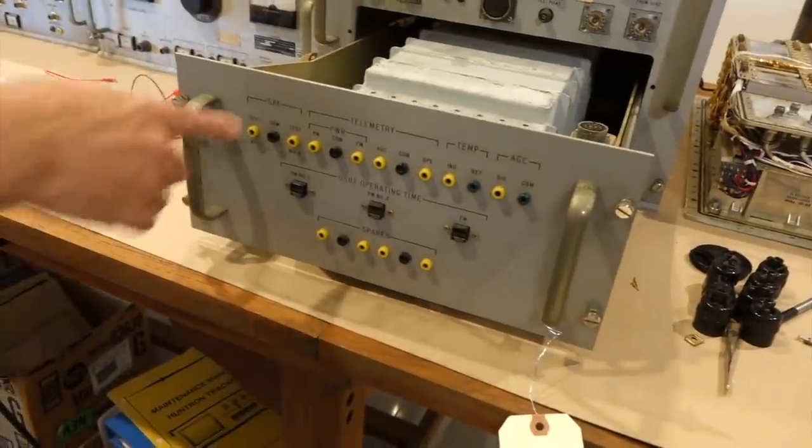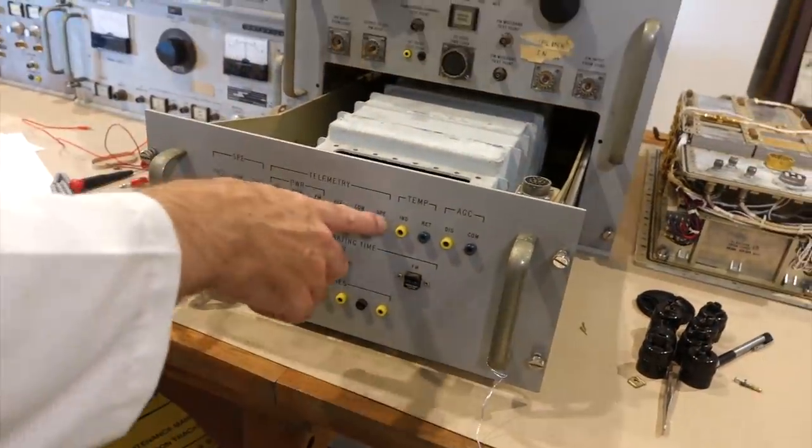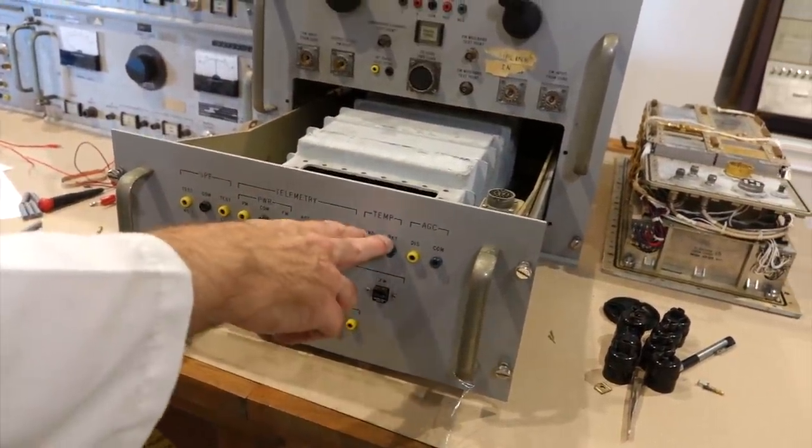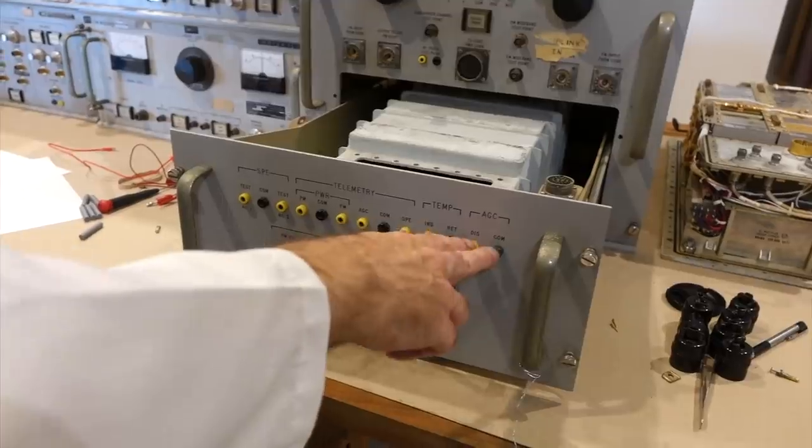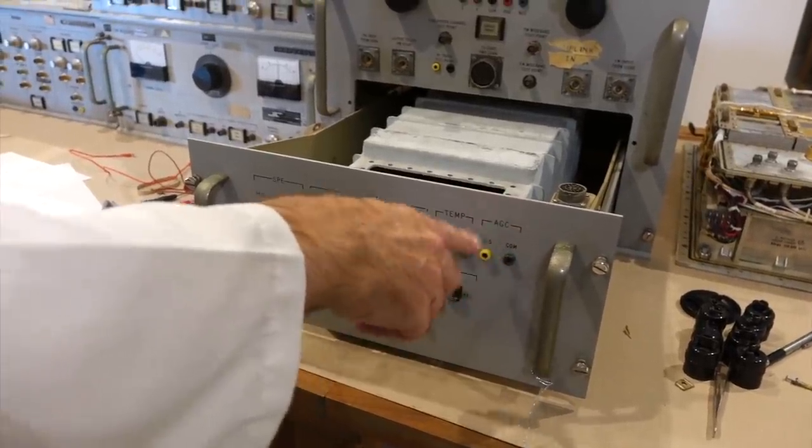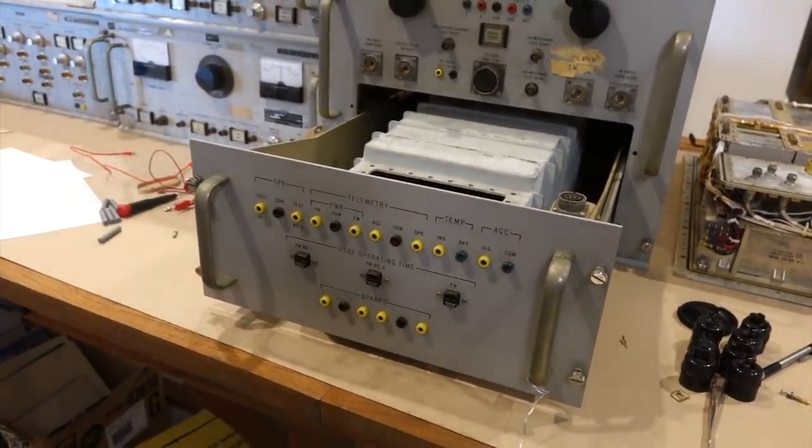So then the signals from the transponder that go into this connector, they have breakouts here. So you have your static phase error, some telemetry signals, you've got the temperature thermistor, and AGC is your automatic gain control, not Apollo guidance computer.